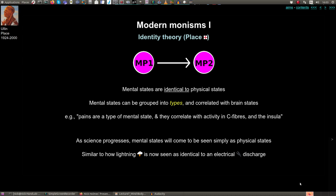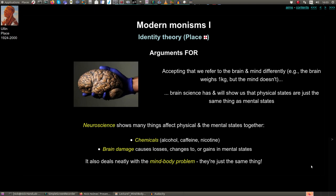So why might we go along with identity theory? It's obvious in our day-to-day life that we talk about the mind and the brain differently. We would say some things about the brain — for example that it weighs a kilogram or is cold and clayey — but we wouldn't say those things about the mind. But that's not a problem for the identity theorist, because what's really interesting is what the brain does: when it's in a particular physical state, that's just the same thing as a mental state.